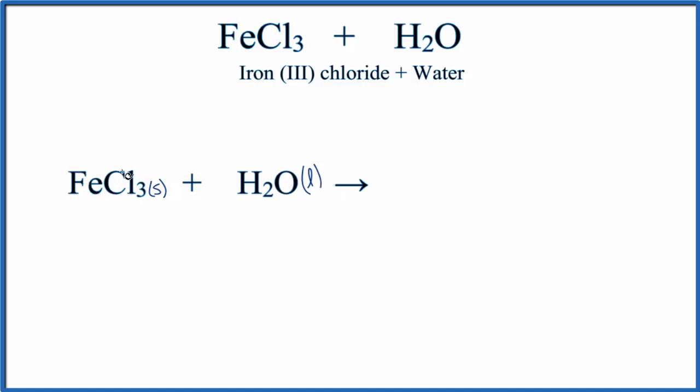So let's write that. We have Fe3 plus, and then we have Cl minus. This 3 here tells us that we have 3 Cl minuses, so we need to put a coefficient of 3 in front of the Cl minus.